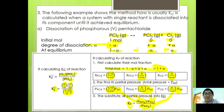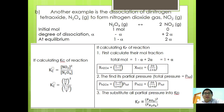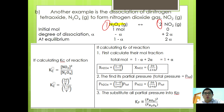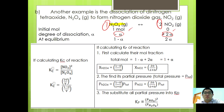Another example is the dissociation of dinitrogen tetroxide into nitrogen dioxide gas: N2O4 dissociates to form 2NO2. Note that the stoichiometry is different here — one mole of N2O4 forms two moles of NO2. So initially if we have one mole of N2O4 and no moles of NO2, and the degree of dissociation is alpha, then because one N2O4 dissociates to become two NO2, if alpha of N2O4 dissociates, then 2 alpha of NO2 is formed. The stoichiometry is 1 to 2. Therefore at equilibrium we have 1 minus alpha of N2O4 and 2 alpha of NO2.